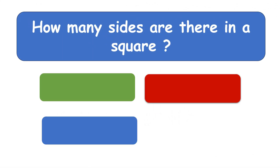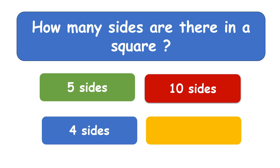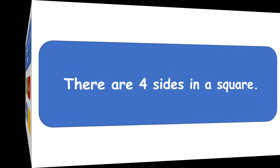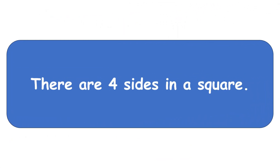How many sides are there in a square? Four sides. There are four sides in a square.